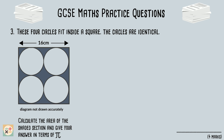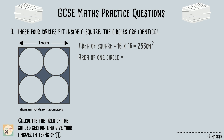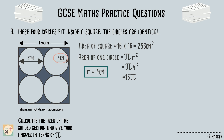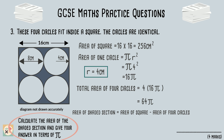Firstly, find the area of the square by squaring the length of 16cm. Next, we can find the area of just one circle by working out the radius to use in our formula. If the length of the square is 16cm and the circles are identical, then the diameter of one circle will be half of the square's length. The radius is then half of this. We can now work out the area of one circle. To find the total area of all four circles, we can multiply our answer by 4. Now we have the area of all four circles, we can subtract this from the area of the square.